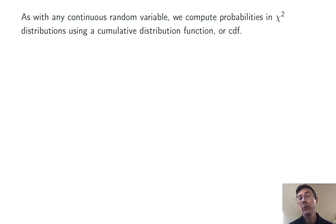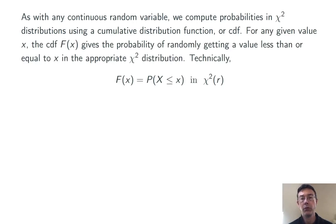As with any continuous random variable, we compute probabilities in a chi-squared distribution using a CDF, a cumulative distribution function. For any given value of x, the CDF capital F(x) gives the probability of randomly getting a value less than or equal to x in the appropriate chi-squared distribution. Here's the technical definition: F(x) is equal to the probability of randomly getting a value for big X less than or equal to the specified value of little x in that chi-squared distribution.